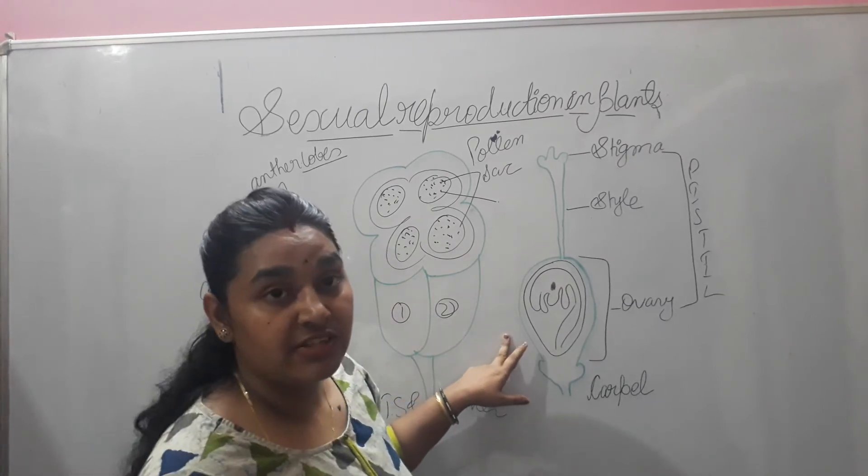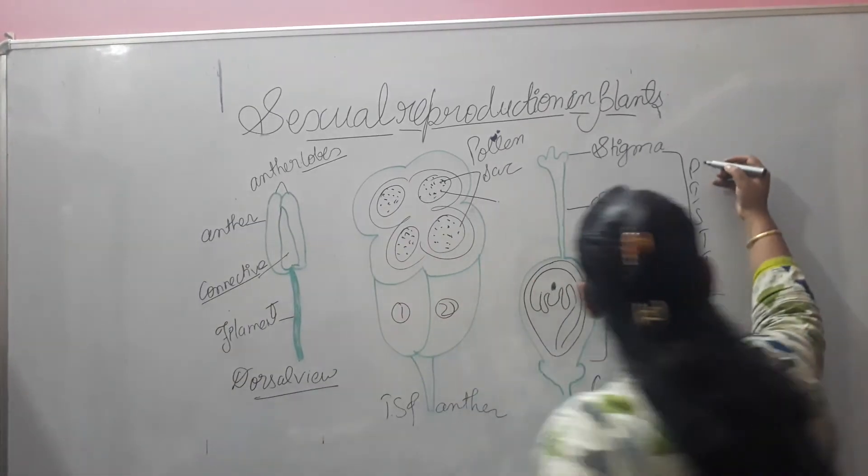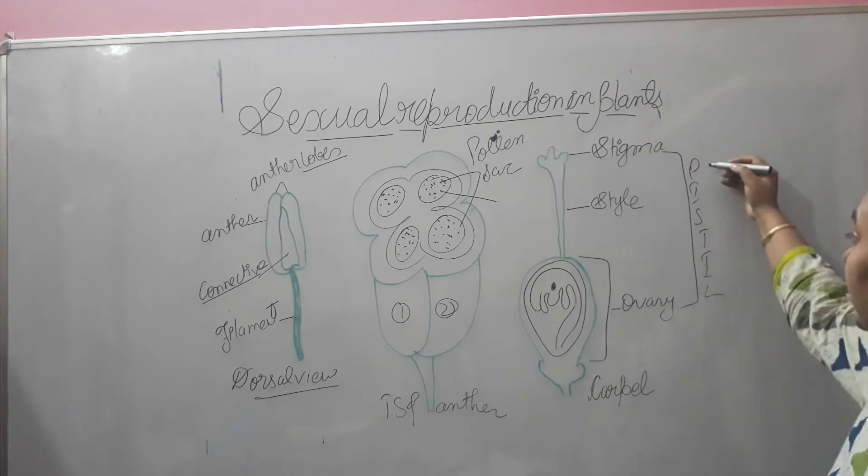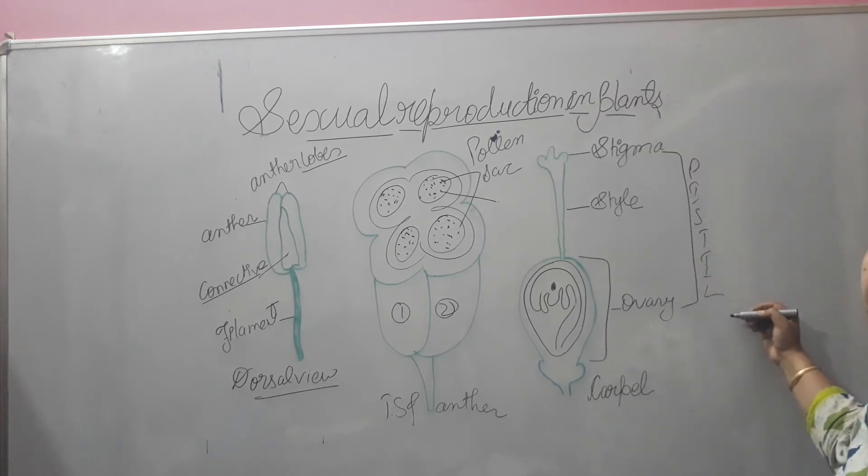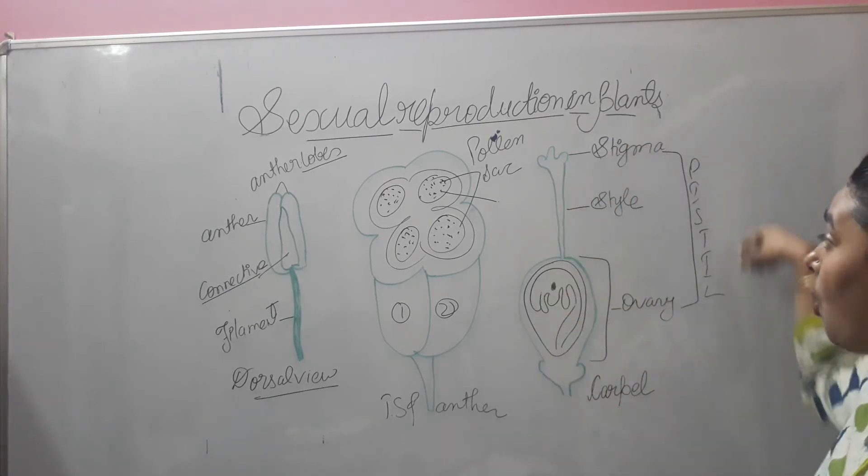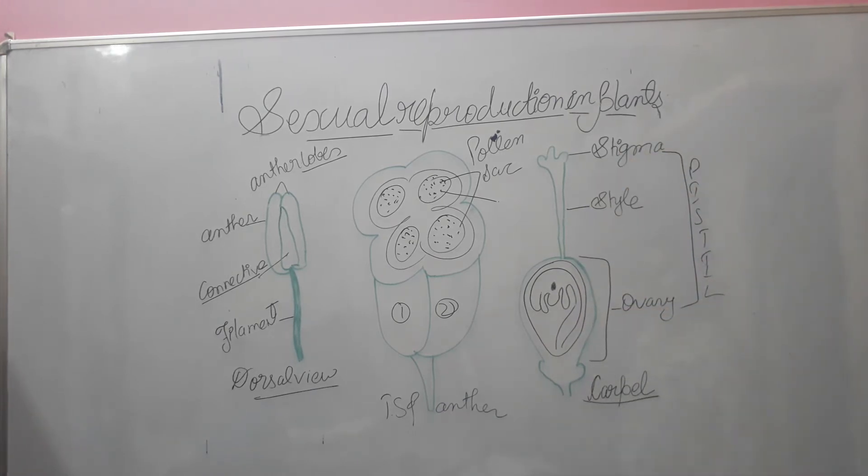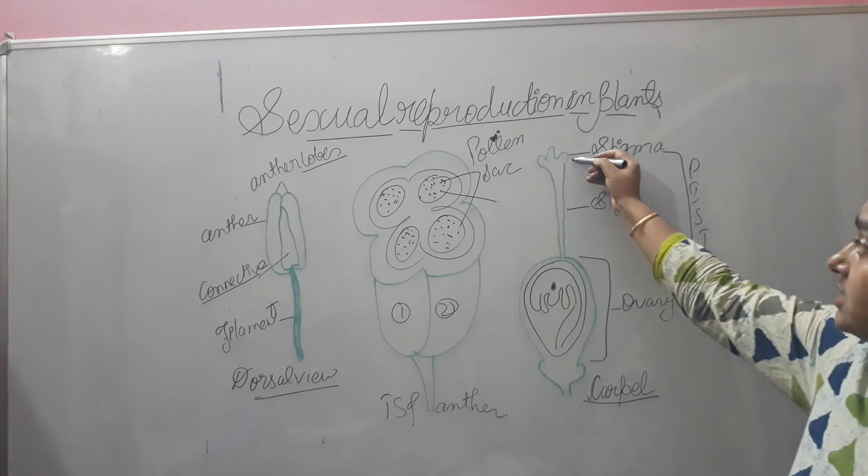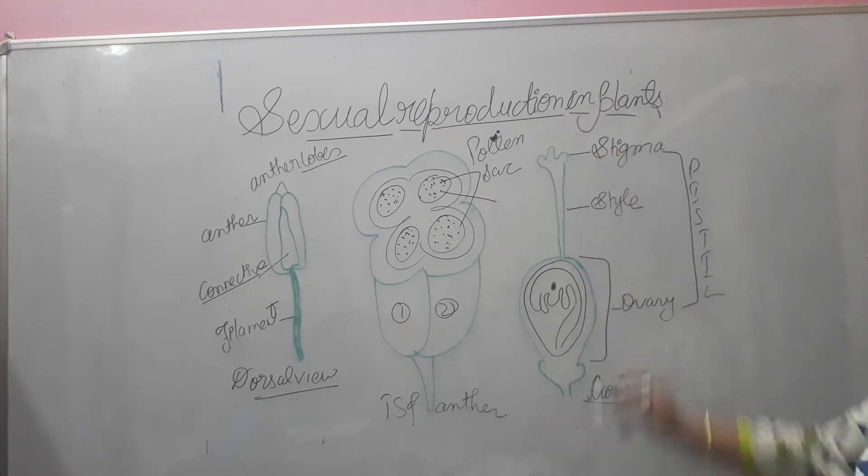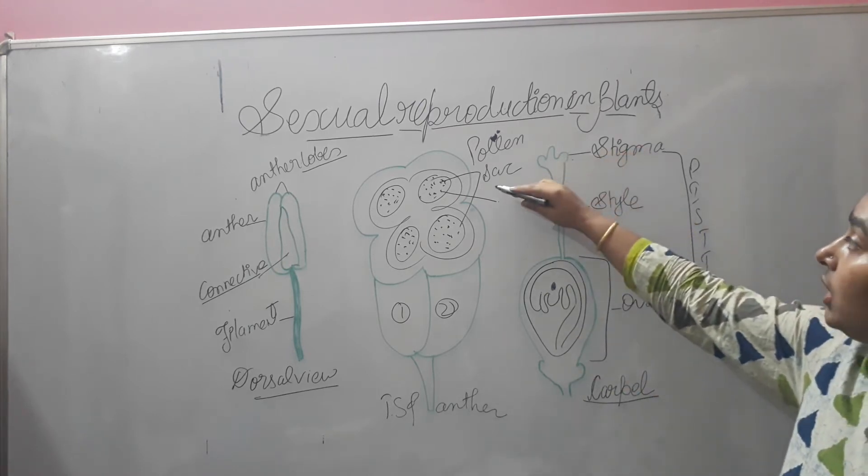Coming to the female reproductive part, which you will see over here, stigma, style and ovary are collectively called the pistil. And if you talk about all the female reproductive parts, it is called the carpel. This is the place called stigma. On the stigma, pollen lands.